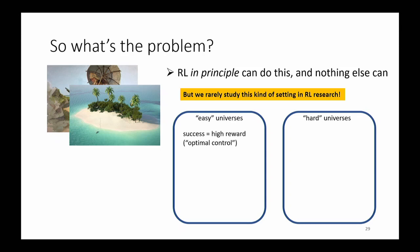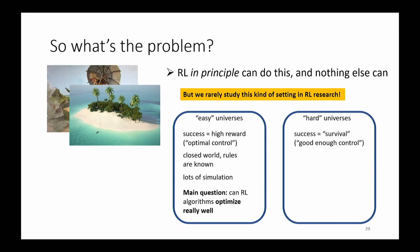Here are some differences between easy and hard universes for RL. In easy universes, success means a high reward — not just keeping the ball in the air in Breakout, but getting a really high score. It's a closed world with known rules, typically handled with lots of simulation, and the main question is whether your RL algorithm can optimize really well. In the real world, success is more like survival — just getting by. It's open world where everything comes from experience, there's no simulation because the rules are unknown, and the main question is whether RL can generalize and adapt.